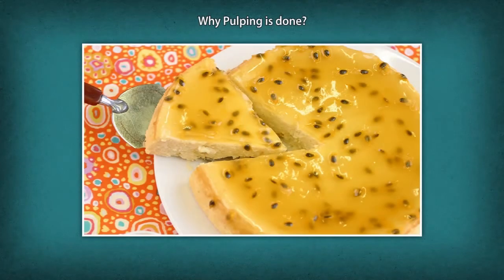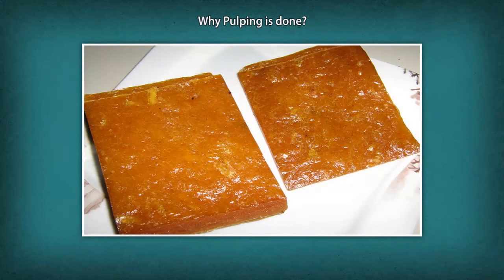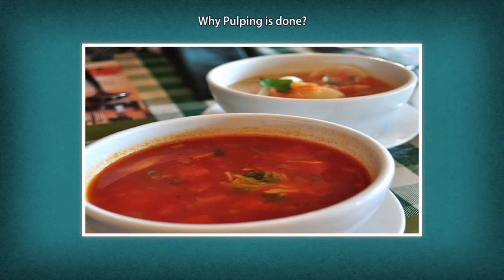Pulping is done to preserve fruits for a longer time, so they can be used again when they become out of season.